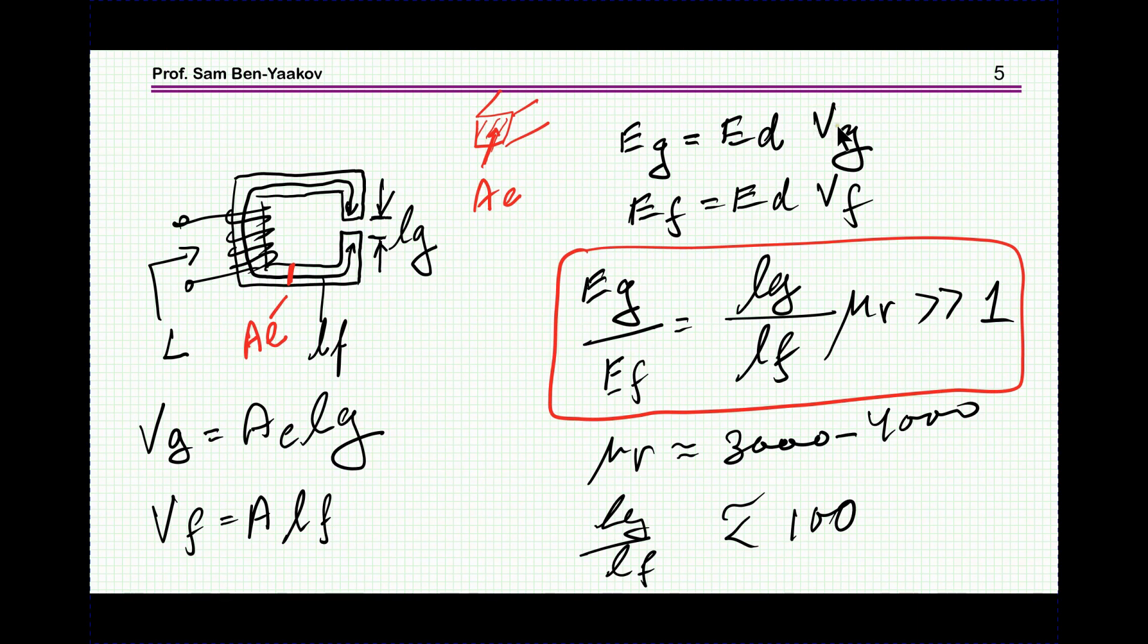Energy within the ferrite is ED times VF, and energy within the gap is the energy density times the volume of the gap. Taking the ratio between them, it turns out to be LG over LF times μR.